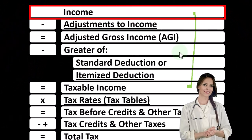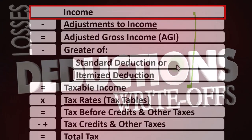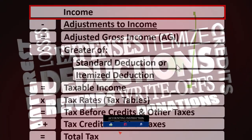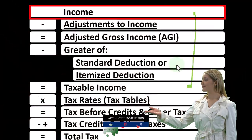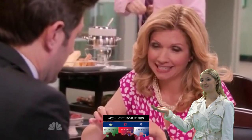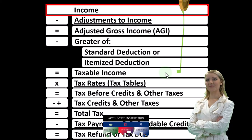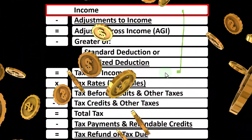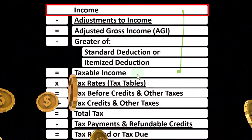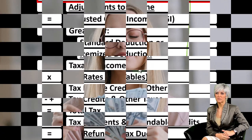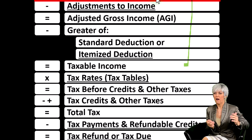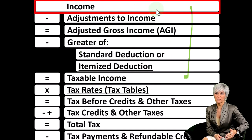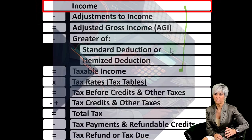Then we have the greater of the standard deduction or itemized deductions — you could think of these as similar to expenses. We're going to take the greater of these two; you could call these the below-the-line deductions. This gets us to taxable income, which is in essence equivalent to net income in a normal income statement, except everything's flipped on its head: we want taxable income to be as low as possible. That means we'd like to exclude income if legally possible, and we'd like our deductions to be as high as possible.